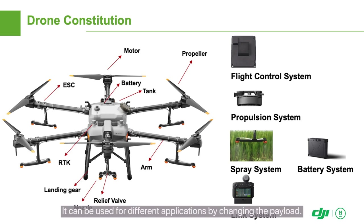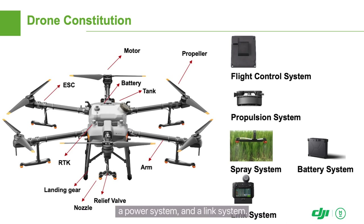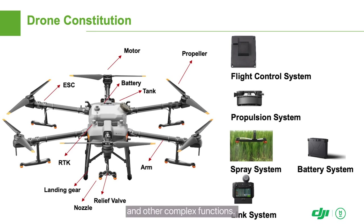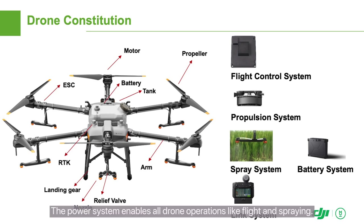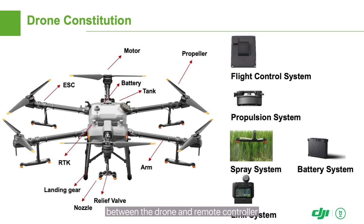The Agris drone mainly consists of the flight platform and payload, and can be used for different applications by changing the payload. The flight platform consists of a flight control system, a power system, and a link system. The flight control system enables automated flight and other complex functions. The power system enables all drone operations like flight and spraying. The link system establishes a two-way connection between the drone and remote controller.